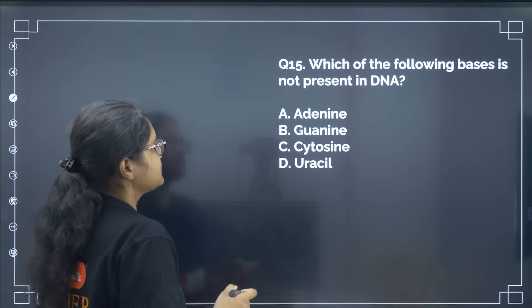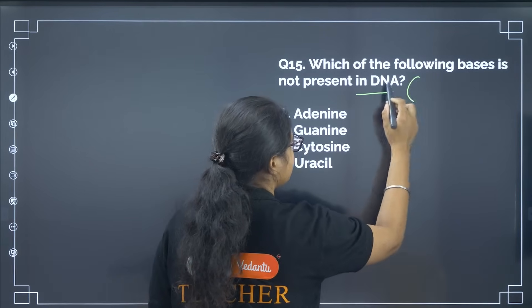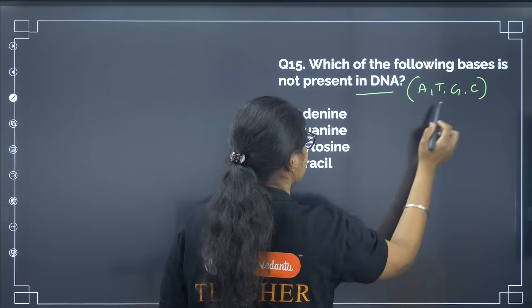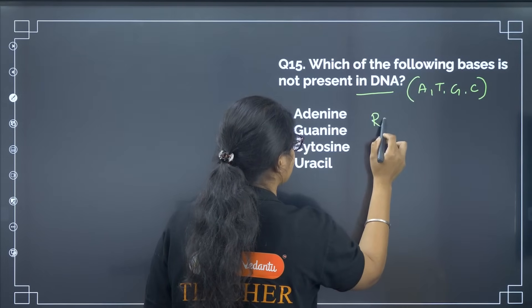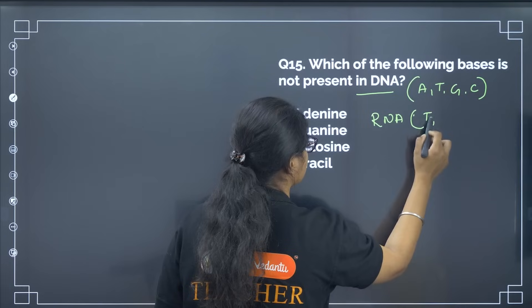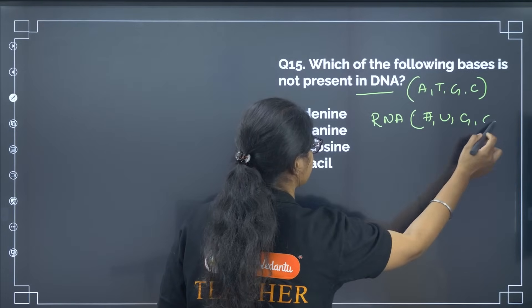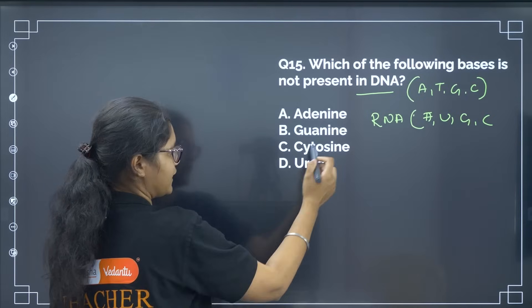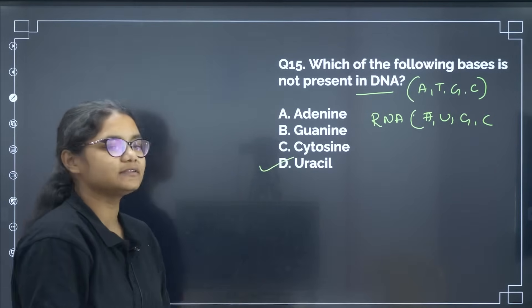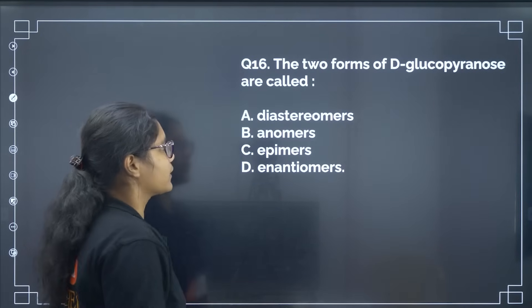Which of the following bases is not present in DNA? In DNA we have A, T, G, and C. In RNA we have A, U, G, and C. So U (uracil) is not present in DNA. The correct answer is option number D.